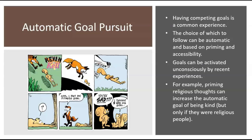One basic way that automatic thinking functions is through automatic goal pursuit, which is a fancy way of saying we often exhibit behavior pointed toward achieving a specific goal. At the same time, there are often things that get in the way — like I need to record videos for my lectures, but I also would really like to eat my lunch. Those are incompatible or competing goals.